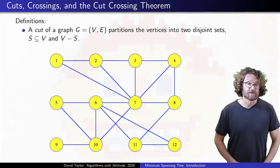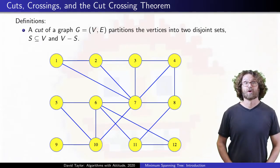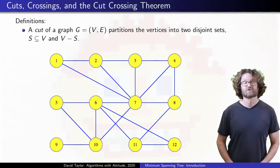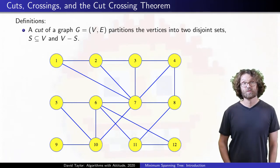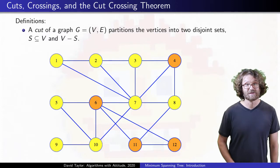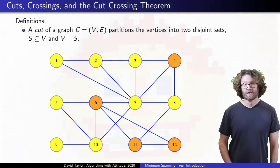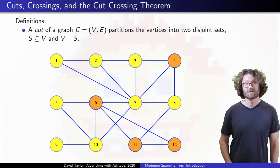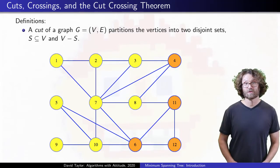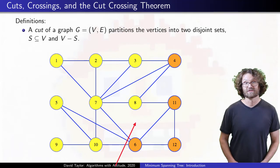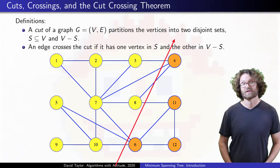We need a couple of definitions. A cut in a graph is a partitioning of the vertices into two sets. Maybe we partition this graph with 4, 6, 11, and 12 in one set, and everything else in the other. There is nothing special about how the vertices are arranged, we can move them around to make the cut more clear, and then it is easy to see the edges that cross the cut.